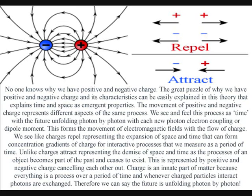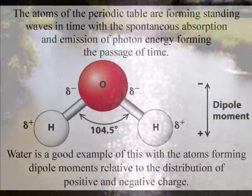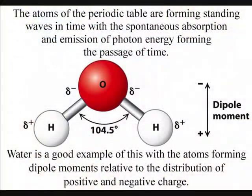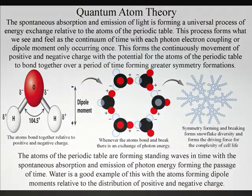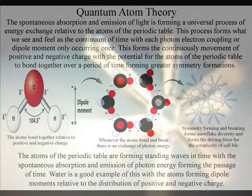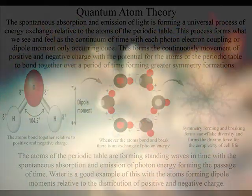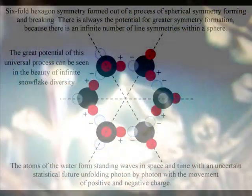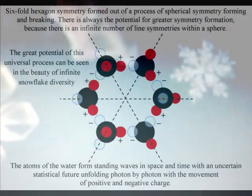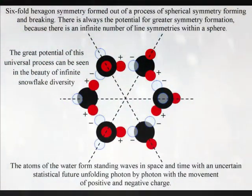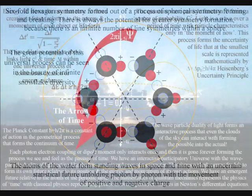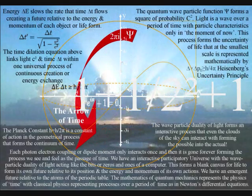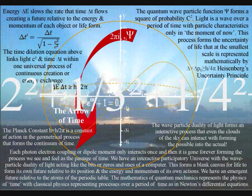As in water this will form the potential for six-fold symmetry. We can divide the geometry of a circle to form this six-fold symmetry and this can be seen in the beauty of infinite snowflake diversity. But as a quantized linear process of energy exchange it can also be seen in the structure and sum of an infinite mathematical series in the form of pi squared divided by six.